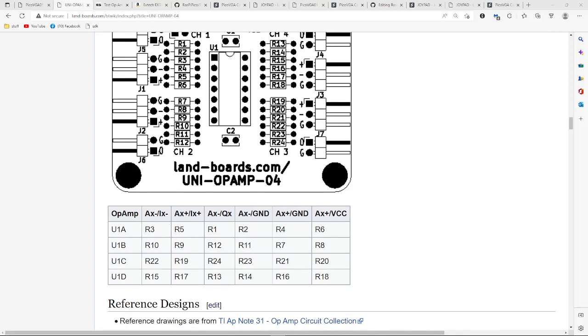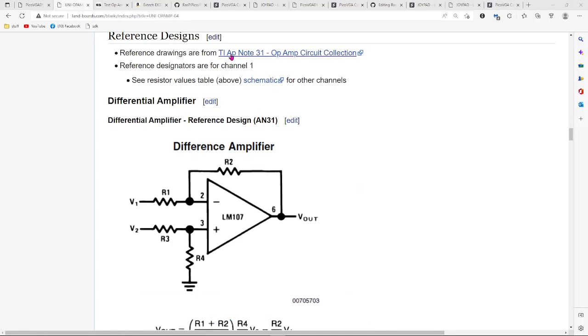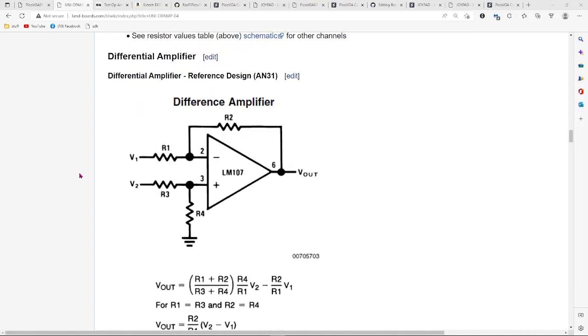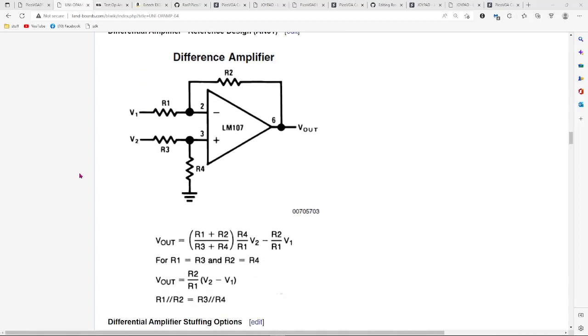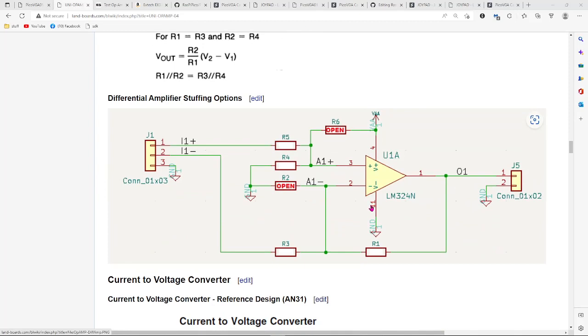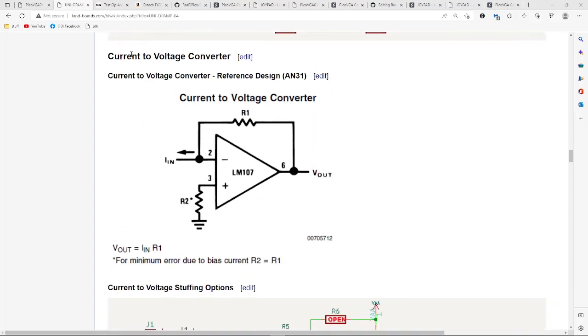Basically anything that can be done with those configurations can be done there. Let's take a look at some typical circuits. These circuits are drawn from TI's app note 31 for op amp circuit configurations. This particular one is a difference amplifier which shows what the different resistors and such would be for that. It's just shown as an example that could be configured on the card because all of these pads are provided, and here in particular showing how to stuff those particular pads for channel one.